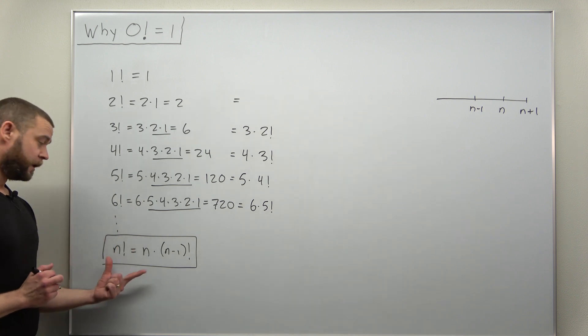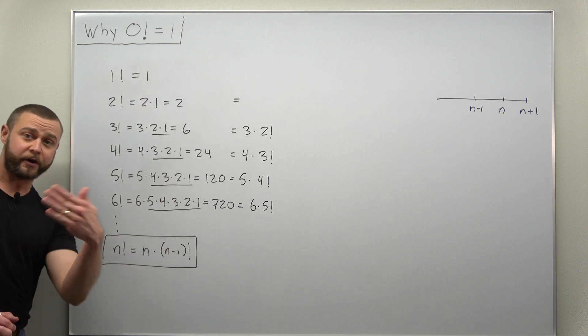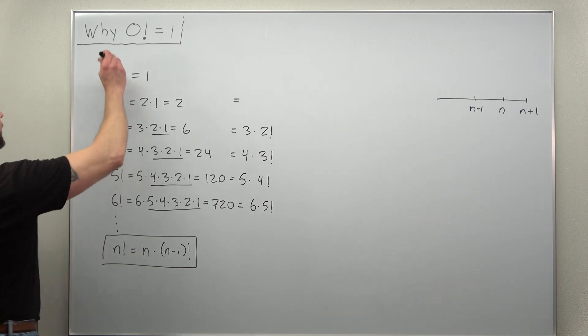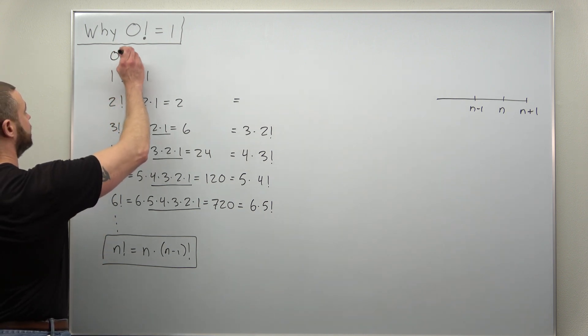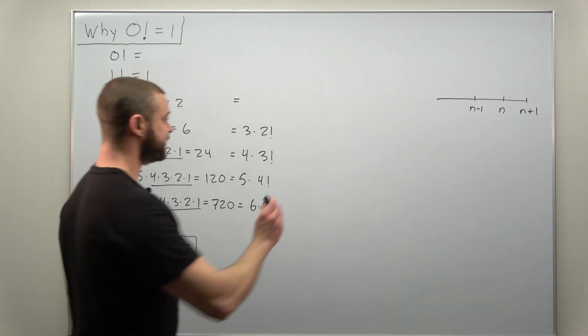Well we can easily continue this list going down: seven factorial, and so on. What about zero factorial, if we were to go the other direction? Well let's go ahead and use this formula.